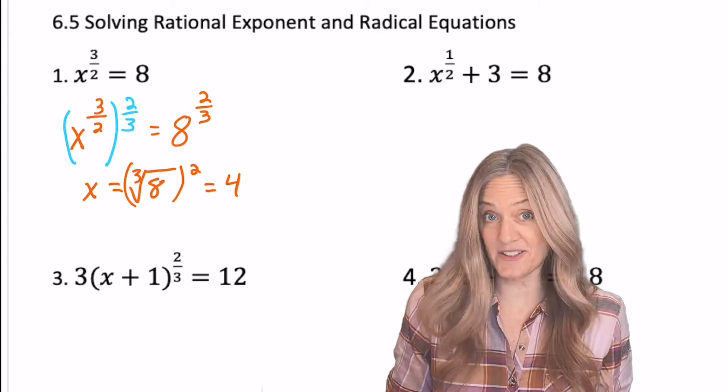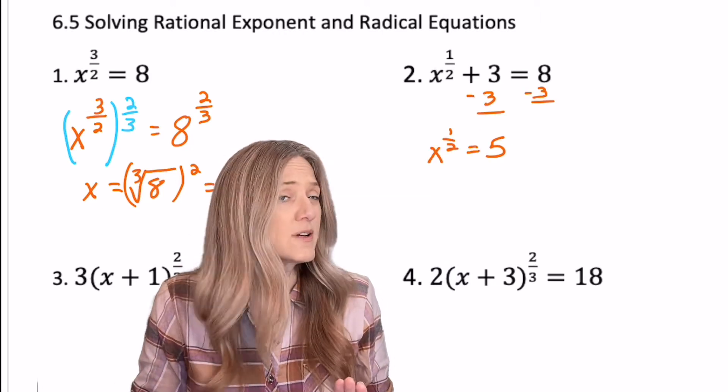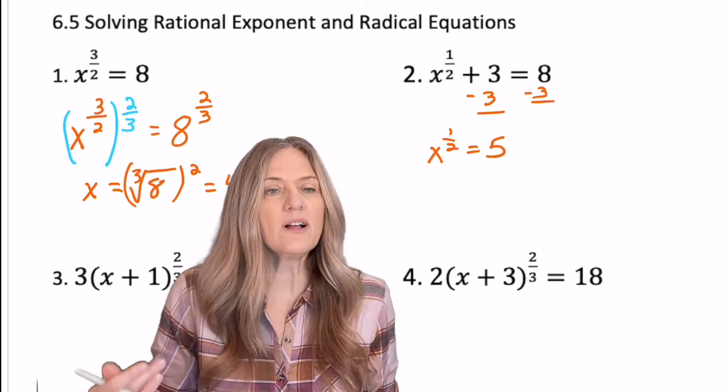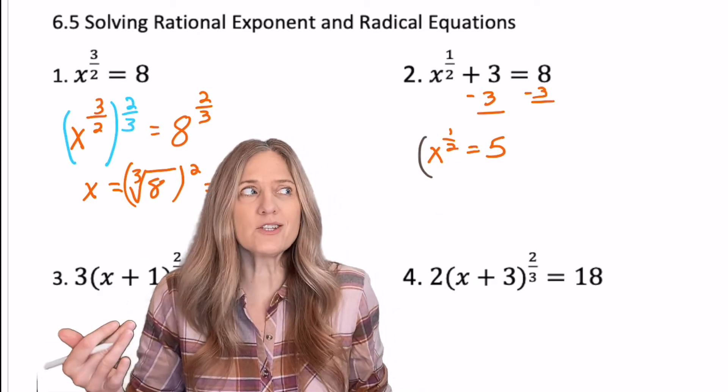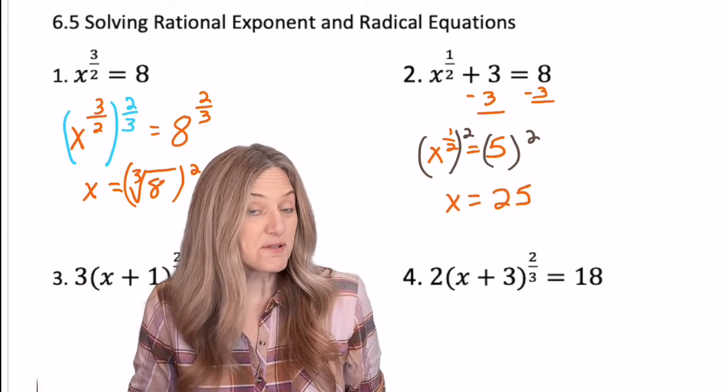So of course, we always isolate. Get that x to the one half by itself and raise it to the reciprocal. How do I get rid of a one half power? We'll just square it, right? Raise it to the two over one. And x equals 25.